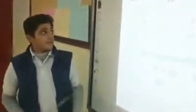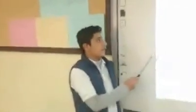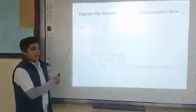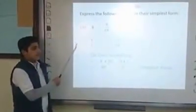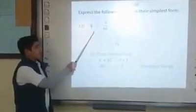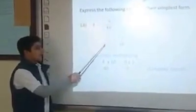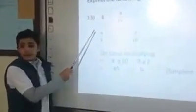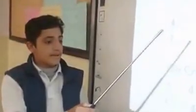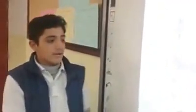Okay. I am going to show you the next problem. The question is: 4 is to 9 over 10. This is a mixed number, so we always put 1 under the whole number. Then we write 4 over 1 and 9 over 10. We multiply: 4 times 10 equals 40, and 9 times 1 equals 9. We cannot simplify further, so the answer is 40 is to 9.